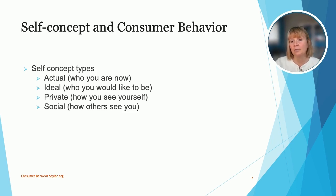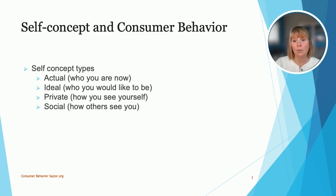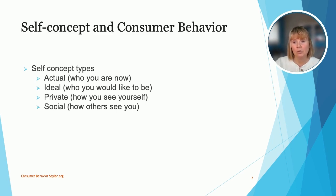The four self-concept types include who you are now, who you would like to be, how you see yourself, and how others see you. Depending on how strongly you feel about your self-concept, certain advertising or marketing may be more effective. For example, if you are overweight and don't want to make home repairs, you may be less likely to watch commercials about home improvement. Or if you're motivated to lose weight and become more active, you may be more open to commercials about weight loss and exercise.